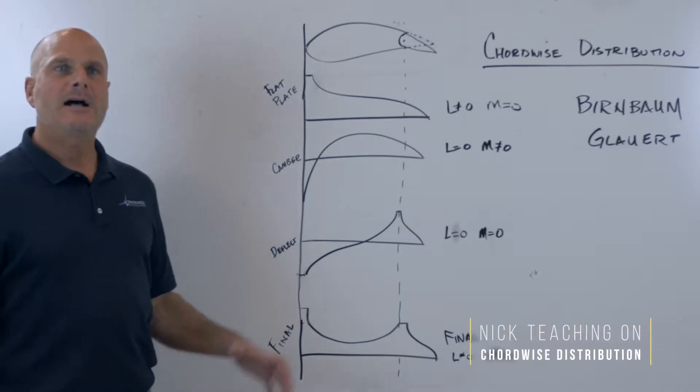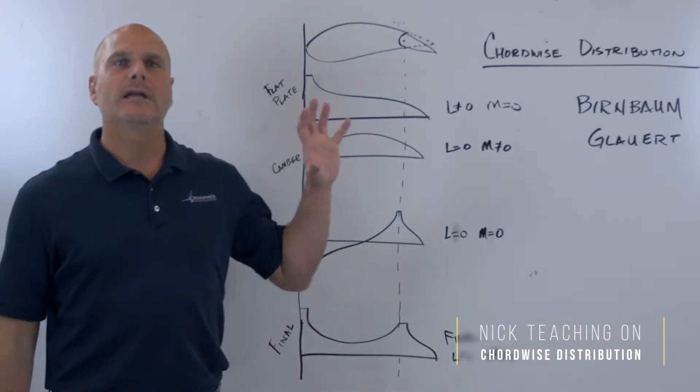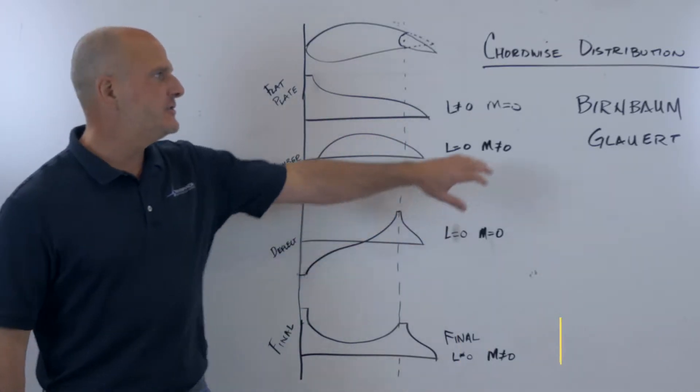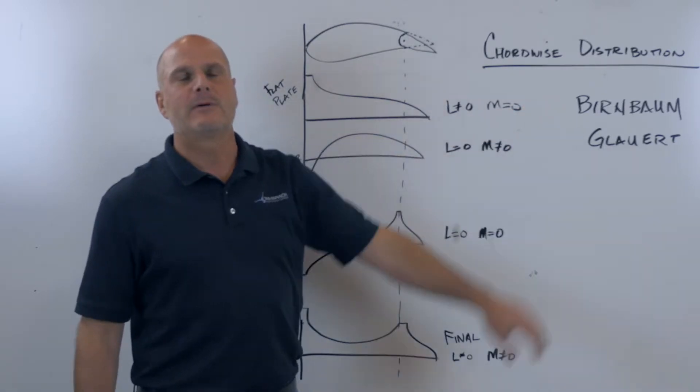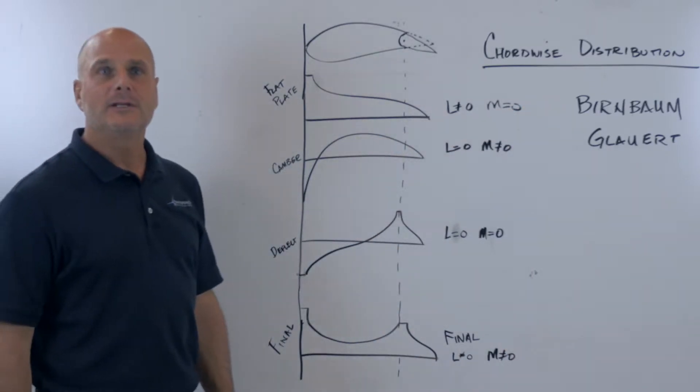Cord-wise distribution. How we distribute the air load along the cord. These two gentlemen, Birnbaum and Glauert, came up with some calculations back in the early 1900s.